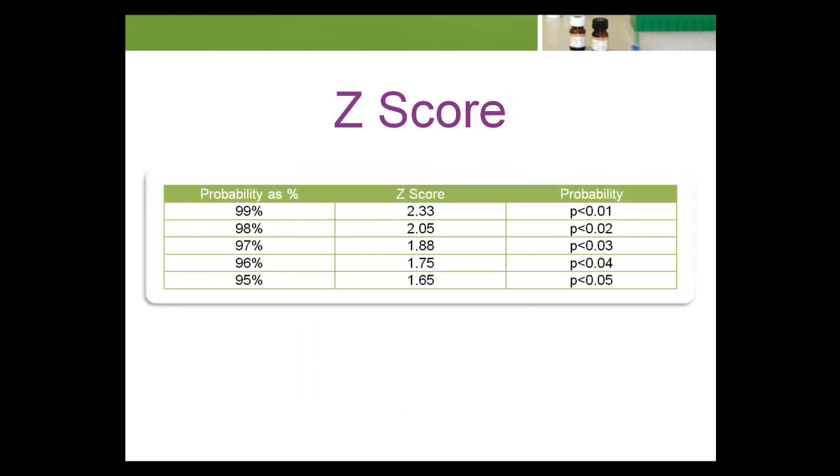Dr. Callum-Fraser provided the following example of probabilities and z-scores in his text Biological Variation, from principles to practice.